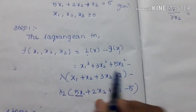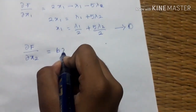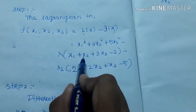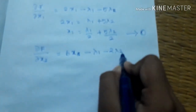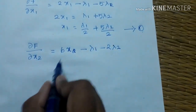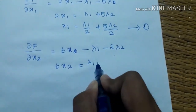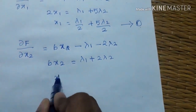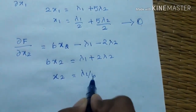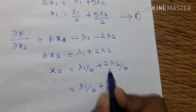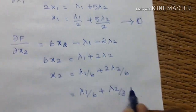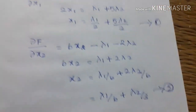So 6x2 minus lambda1 times the x2 coefficient minus lambda2. So the second differentiation gives lambda1 and lambda2 terms for x2.